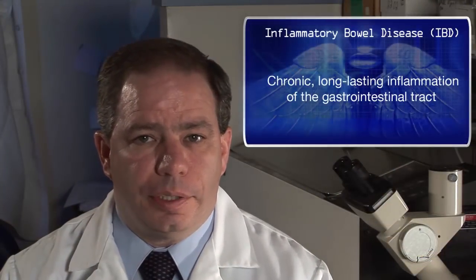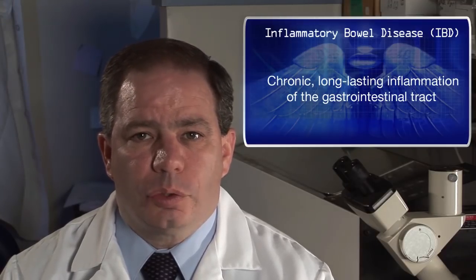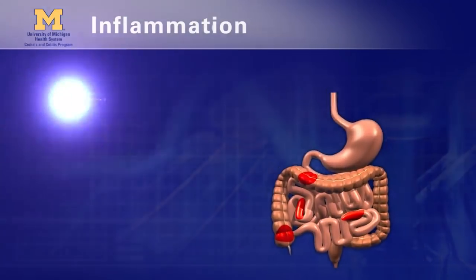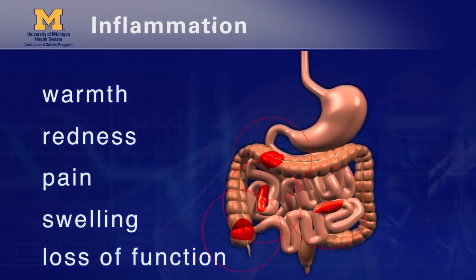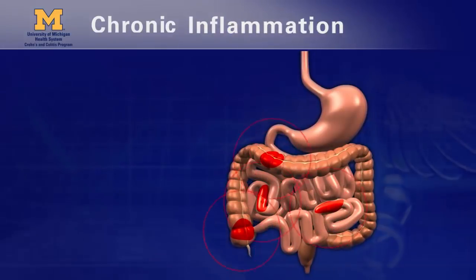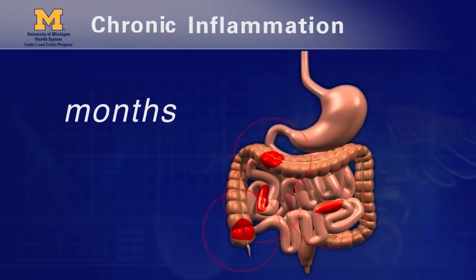Inflammatory bowel disease, or IBD, is a disease of long-lasting or chronic inflammation of the gastrointestinal tract. Inflammation is a result of activation of the immune system, and it generally includes five signs of active inflammation: warmth, redness, pain, swelling, and loss of function. In IBD, these symptoms happen in the gastrointestinal tract and cause symptoms in your belly. IBD is called a chronic inflammatory disease because the immune system is abnormally activated and stays activated for months or years.